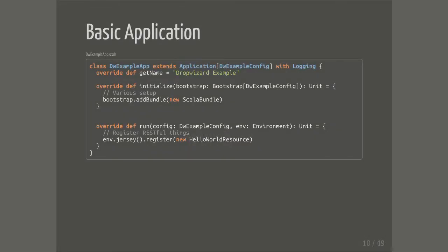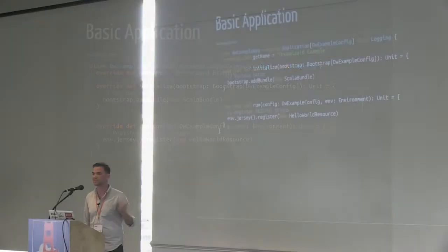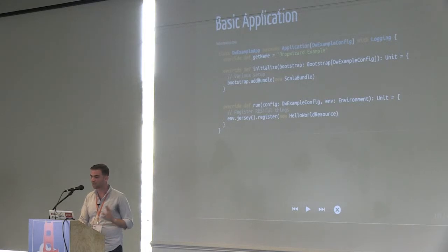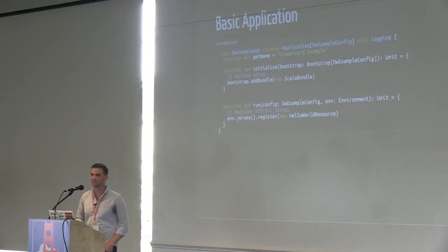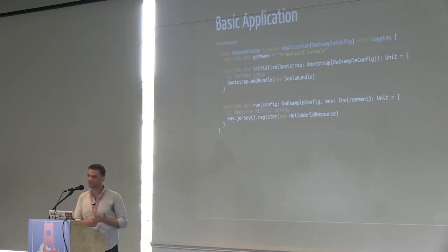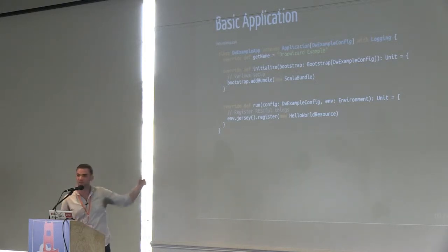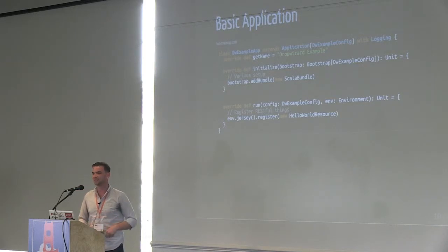Looking at a simple application, there's very little that you need to do — just two methods to implement. Initialize, where you have your setup code; you can see I've got what I'm calling a bundle, which are basically just initializers. Then run, where you actually register with Jersey. DropWizard uses Jetty under the hood and JaxRS to set up its endpoints, so you just register your things with Jersey and when you start up, you're good to go.